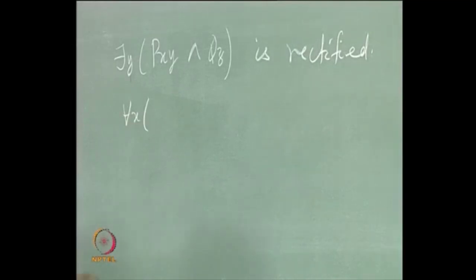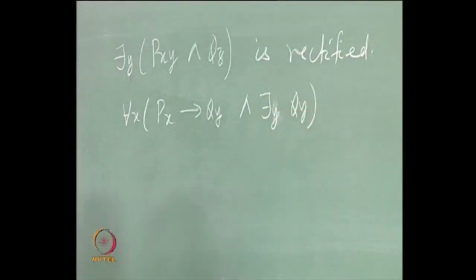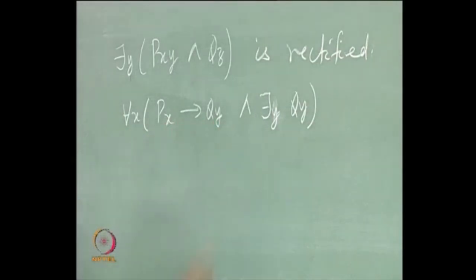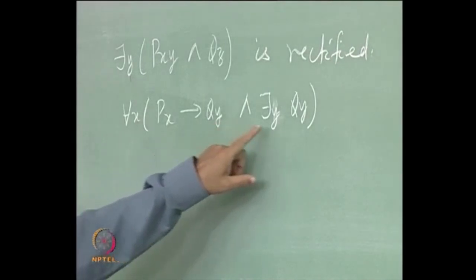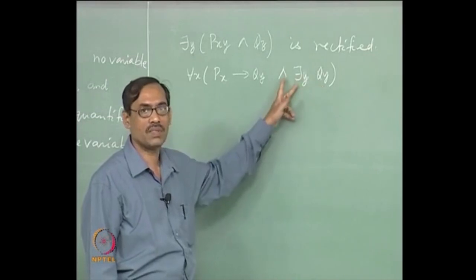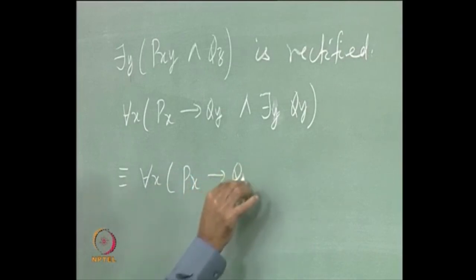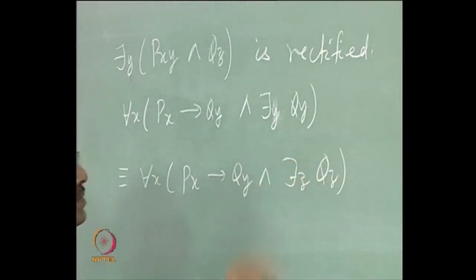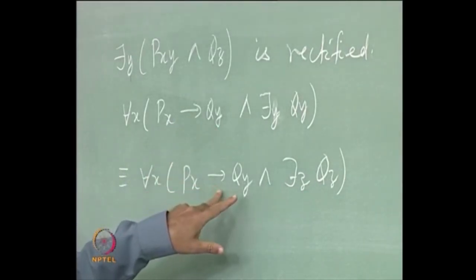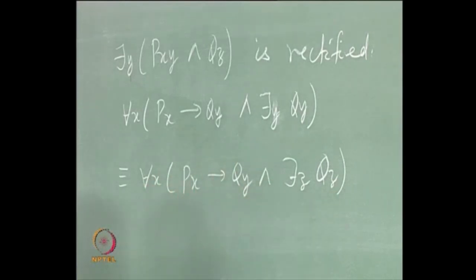Suppose we take another example: for each x, p(x) implies q(y), and there exists y, q(y). There are three variables: x, y, and z. X is a bound variable and not free. Y is a free variable here, but y is also a bound variable. It needs renaming. We rename the bound occurrence: free variables cannot be renamed as it will not preserve equivalence. We write: for each x, p(x) implies q(y) and there exists z, q(z). Now x is bound, y is free, z is also bound, and the two quantifiers use different variables. This is rectified.